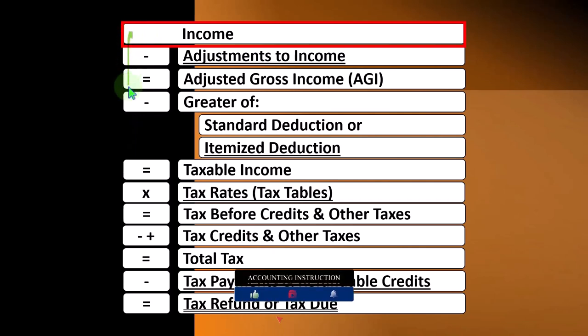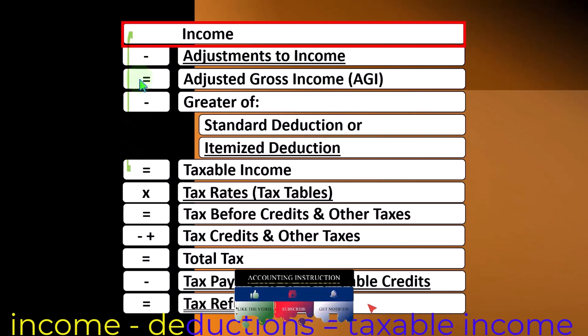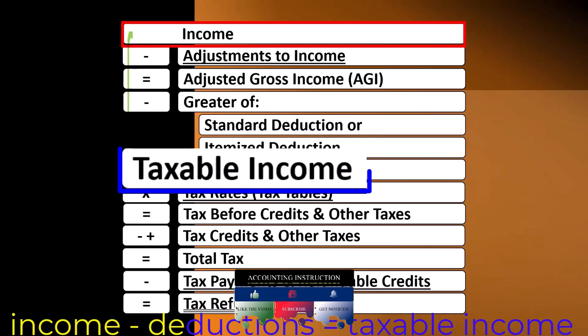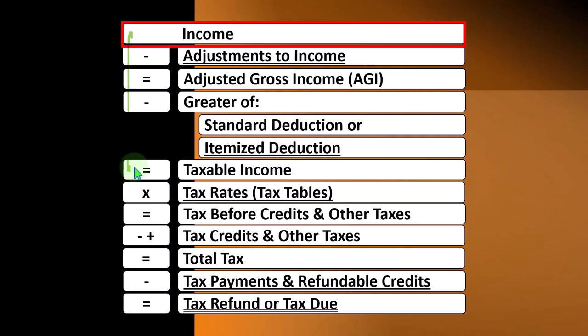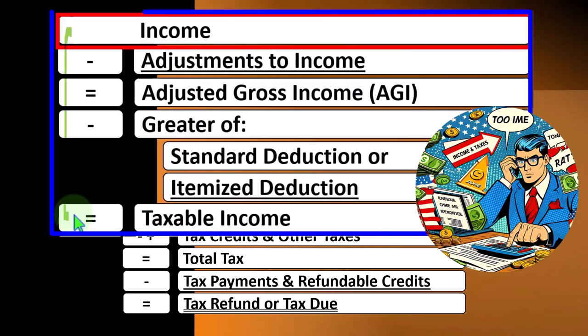We're looking at line one income of the income tax formula. The first half of the income tax formula is basically a funny income statement: income minus deductions instead of expenses, resulting in taxable income instead of net income. Schedule E, like Schedule C for sole proprietors, has an income statement format — rental income minus rental expenses, resulting in net rental income.